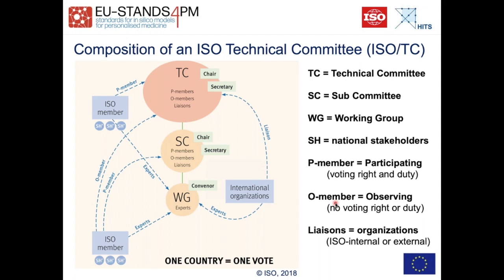An important thing: this system has been developed over decades, which means ISO committees are typically quite stable. The standards they release are meant to be maintained for a long, long time and are regularly checked — international standards, for example, are checked every five years to see if they are still valid or need modification. This is a big difference from grassroots initiatives, where activity depends on how active the people are. At ISO there is a formal duty for technical committees to maintain the standards.